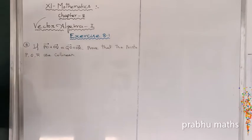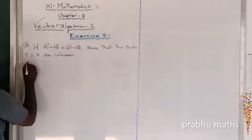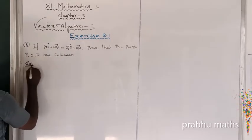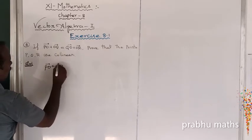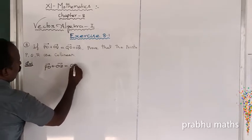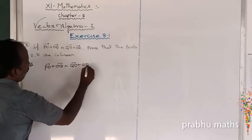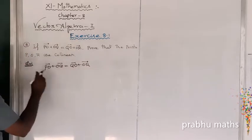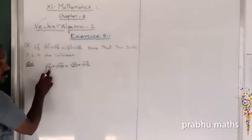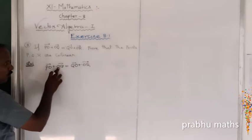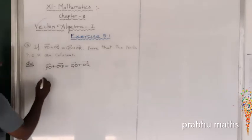The given condition is PO vector plus OQ vector is equal to QO vector plus OR vector. This is the path - P is going to O, O is going to Q.